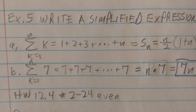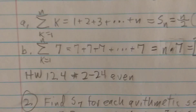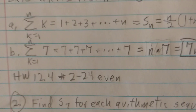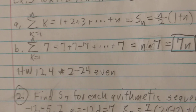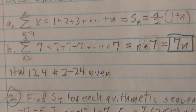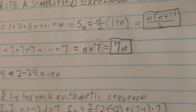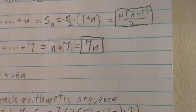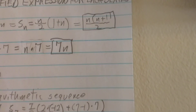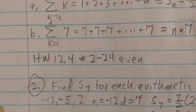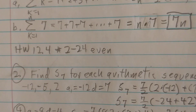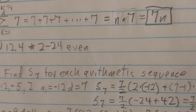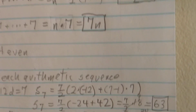For example 5, we write a simplified expression for each sequence. The first one — the summation from k equals 1 to n of k — just means to add up the first n positive integers: 1 plus 2 plus 3 plus dot dot dot all the way up to n, which is S sub n equals n over 2 times the first term plus the last term, 1 plus n, usually written as n times n plus 1 over 2. For the second term, the summation from k equals 1 to n of the constant 7 simply means to add 7 to itself n times, which comes out to 7n.